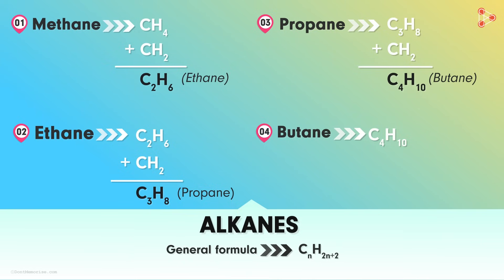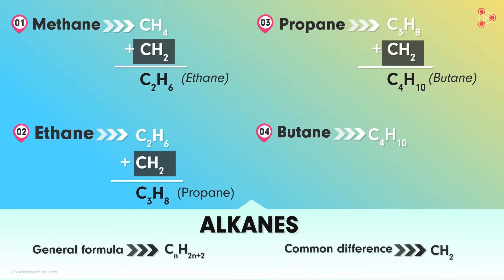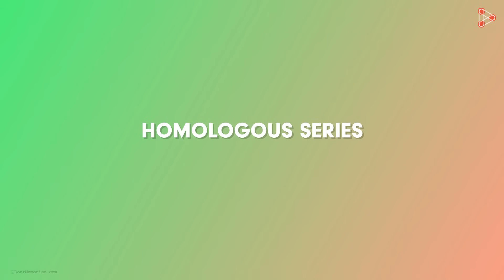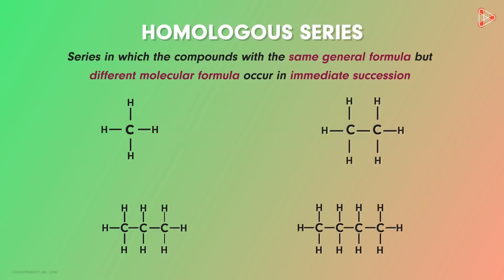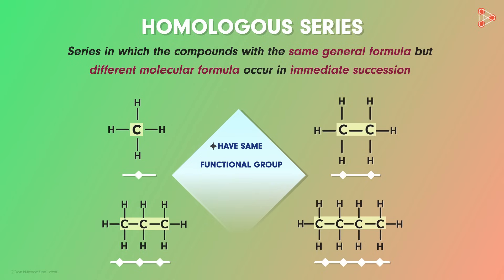We also notice a common difference between any two successive compounds — a common difference of CH₂. Now let's define the term homologous series in simple words: it is a series in which compounds with the same general formula but different molecular formulas occur in immediate succession. The hydrocarbons in the homologous series have different lengths of carbon chains, but possess the same functional group.